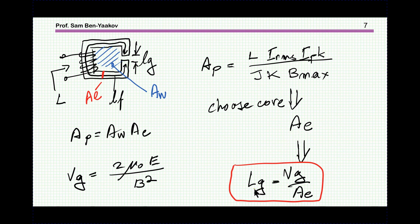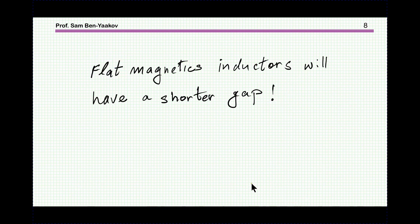Once we choose the core we will now have the length of the gap because the product of the volume is constant. Divide the volume by the cross-section area of the core and it will give you the length of the gap that you need.